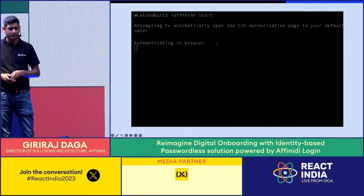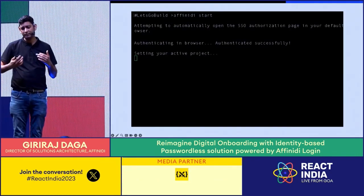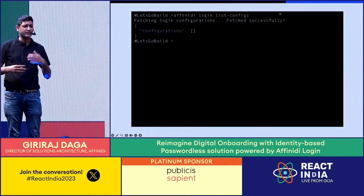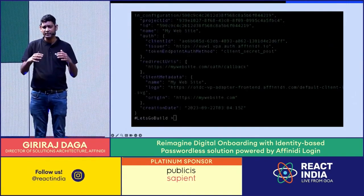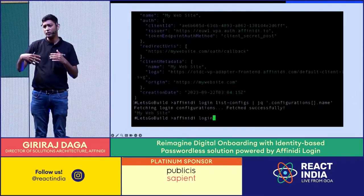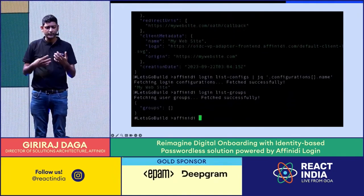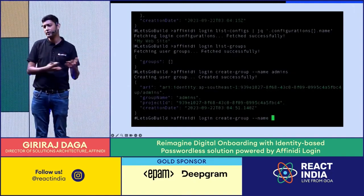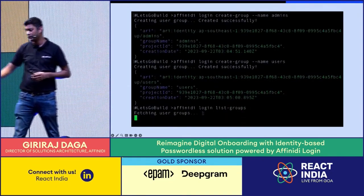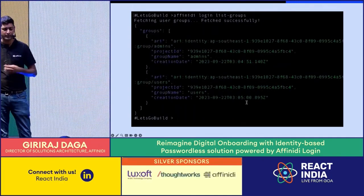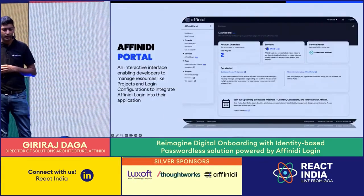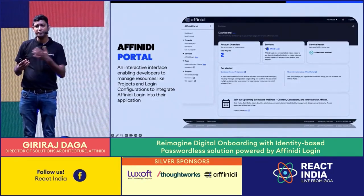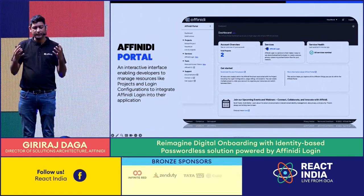With that, I'll leave you with a few resources. We are developer-first, so we have a command line interface — it's as simple as running 'affinity start' and then logging in with your vault. From there you can create projects and login configurations, and in just a few minutes you'll have everything you need. If you prefer a GUI, you can go to portal.affinity.com, where you can find everything.